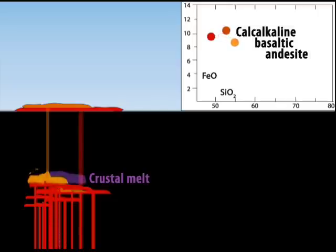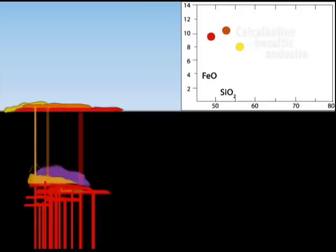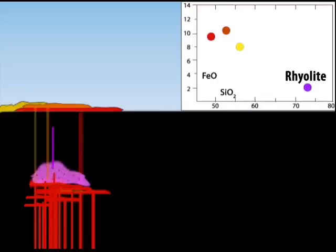The melted crust contaminates the basalt, yielding iron-poor calc-alkaline basaltic andesite. Rhyolite magma grows from coalescing pods of crustal melt. Repeated supply of basalt magma supports continued melting and growth of the rhyolite reservoir.